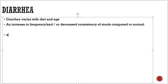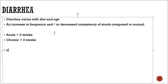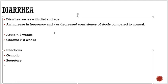Diarrhea can be acute when it is less than two weeks, or chronic when it is more than two weeks. There are different causes of diarrhea — most importantly, infectious causes. There are also osmotic causes, where non-absorbable solutes are in the GIT, such as lactose intolerance when lactose is not absorbed and is lost in the stools.